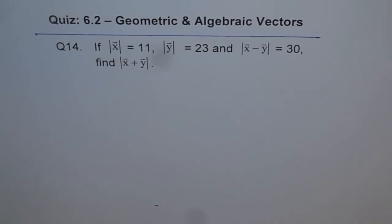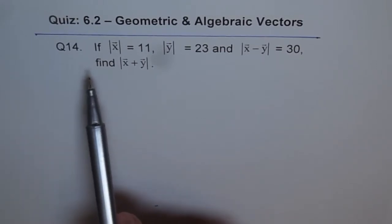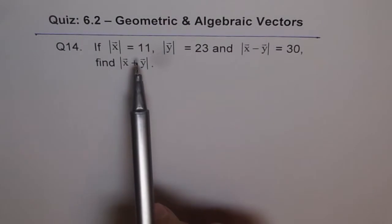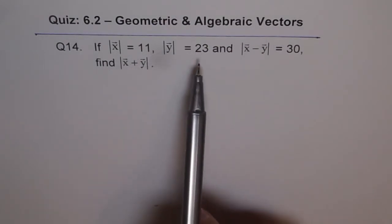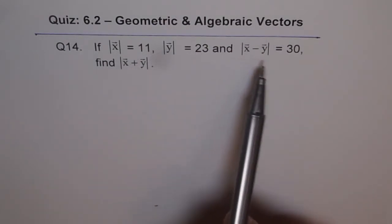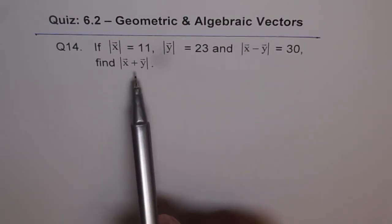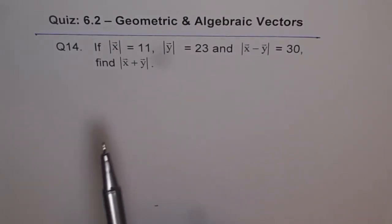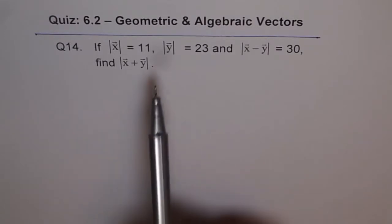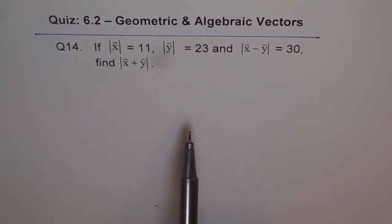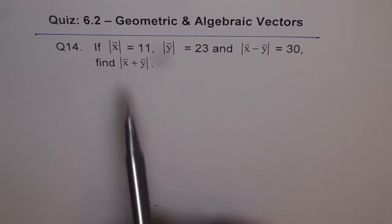Here is the solution for question 14. Question number 14 is: if |x| equals 11, |y| equals 23, and |x minus y| equals 30, find |x plus y|. So we are given the magnitudes of x, y, x minus y, and we need to find the magnitude of vector x plus y.